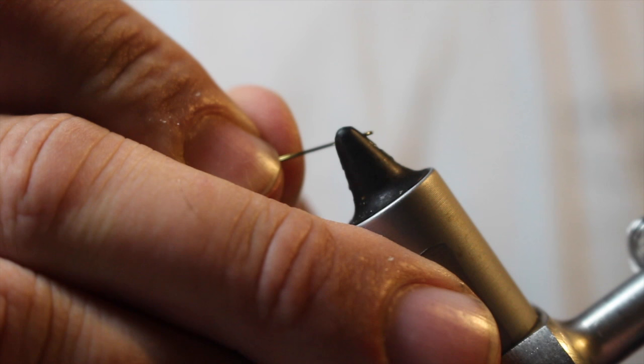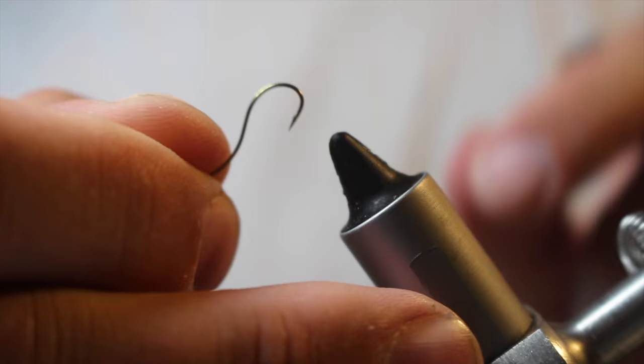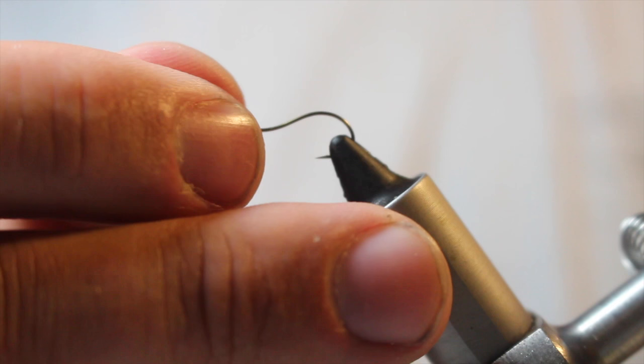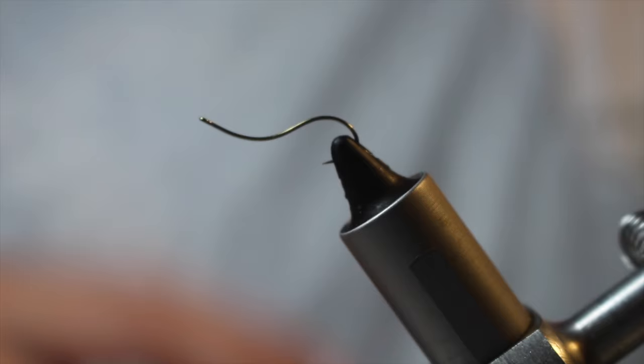As always, I'm going to pinch the barb down on the hook so that we don't hurt our fishy friends. Put the hook into the vise. Now the hook that I'm using is a TMC 400T in a size 12. It's a swimming nymph hook, light wire but it is a perfect hook for Isonychia flies.